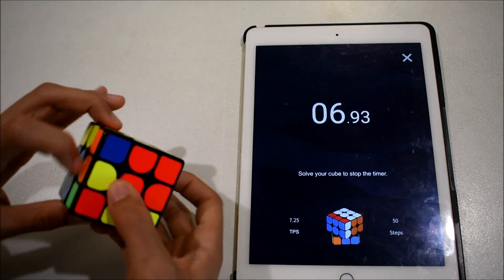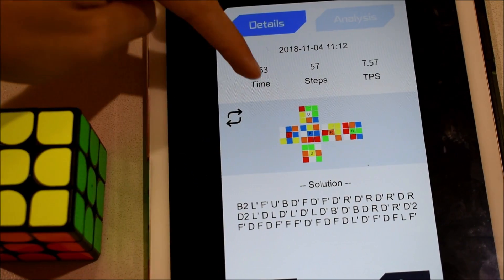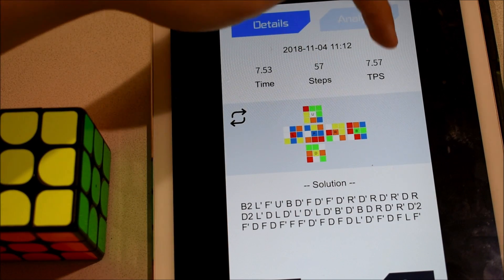When finished, all the information about the solve you would want is available for you. Tap the menu icon to find your time, number of moves and turns per second along with your solution.